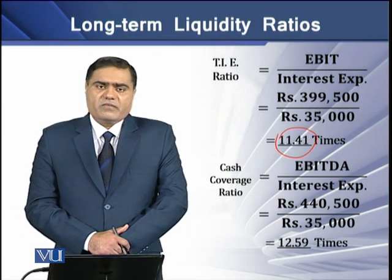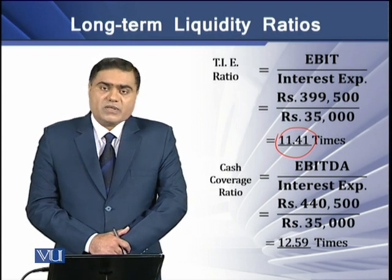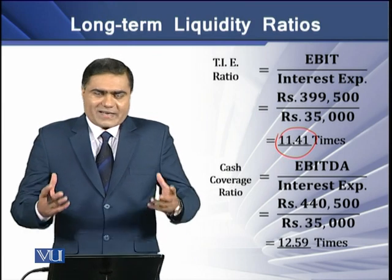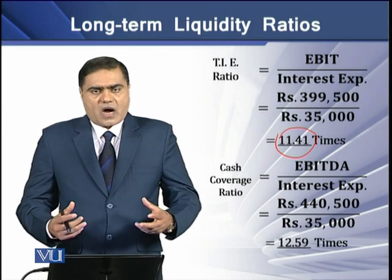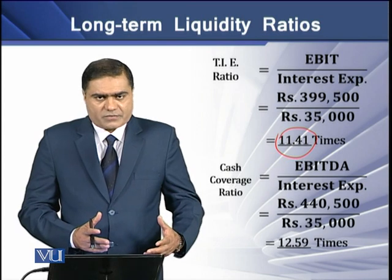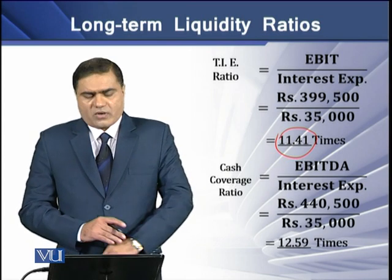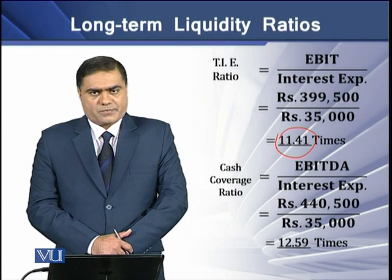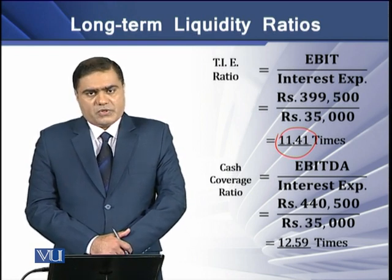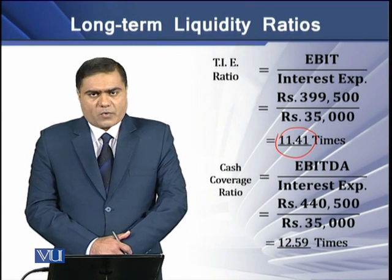A refined version of the TIE ratio is the cash coverage ratio. This ratio tells us how much cash a firm has generated from its operations in order to pay off its interest expense. To determine the cash coverage ratio, we use the variable EBITDA.